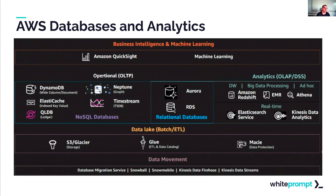Here we can see some of the AWS databases and analytics services they provide. DynamoDB's schema consists of a table that stores items. Those items can have different attributes: a partition key, an optional sort key, or data attributes. The partition key is mandatory — it's a key-value access pattern that determines data distribution. The sort key is optional and controls how items are ordered within a partition. DynamoDB allows querying sort keys with operations like 'begins with' or 'between'.